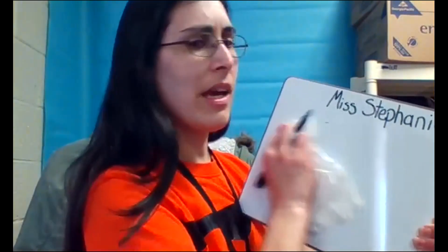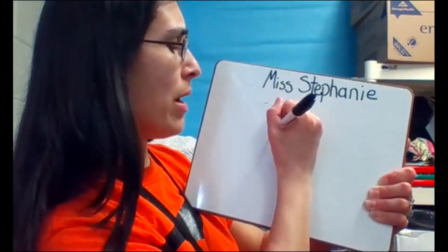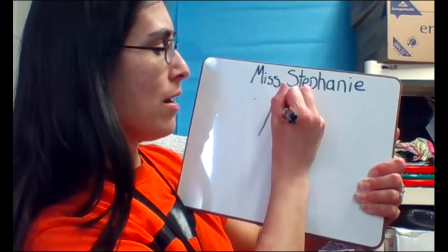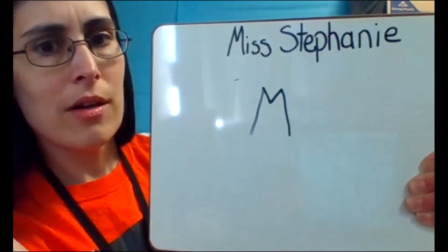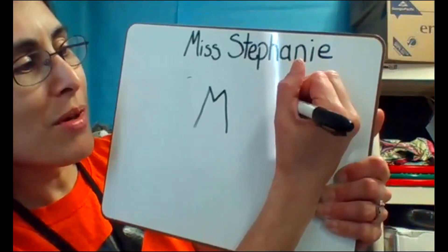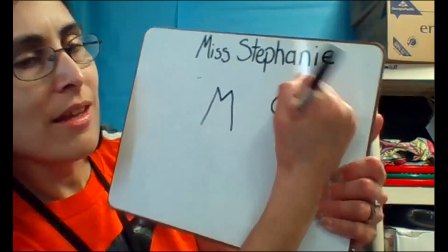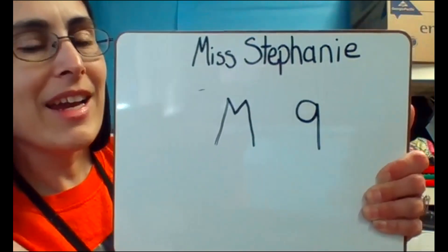What was our letter again? That letter that went up, down, up, down — M. And our number was nine. Nice work — numbers and letter practice.